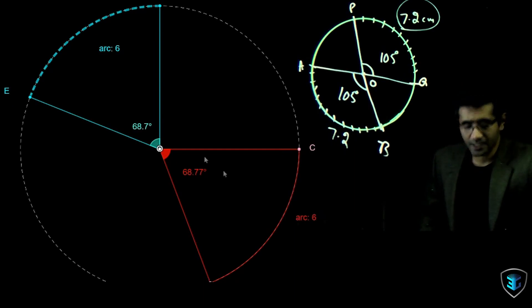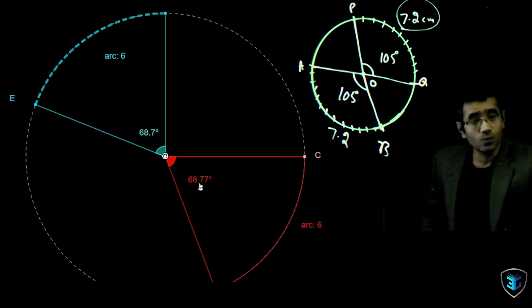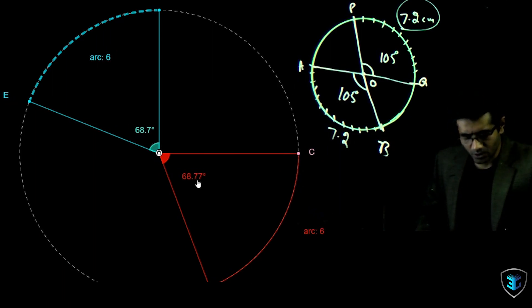So we can understand very clearly now that the central angles are equal only if the arcs subtending that angle are equal. I can see that ED is 6 units and the arc length of BC is also 6, and they do subtend an angle at the center of 68.7 and 68.7.